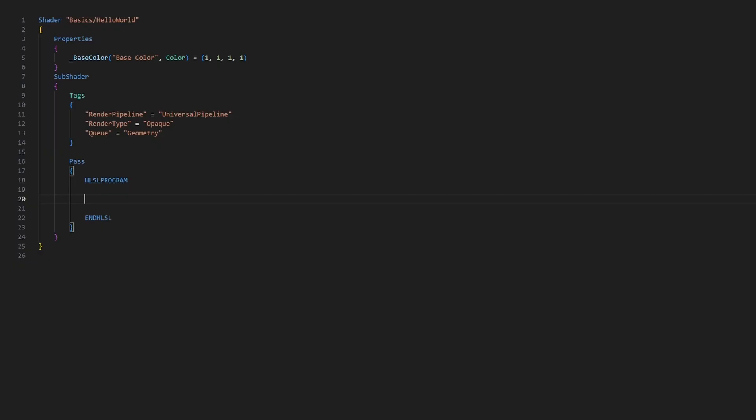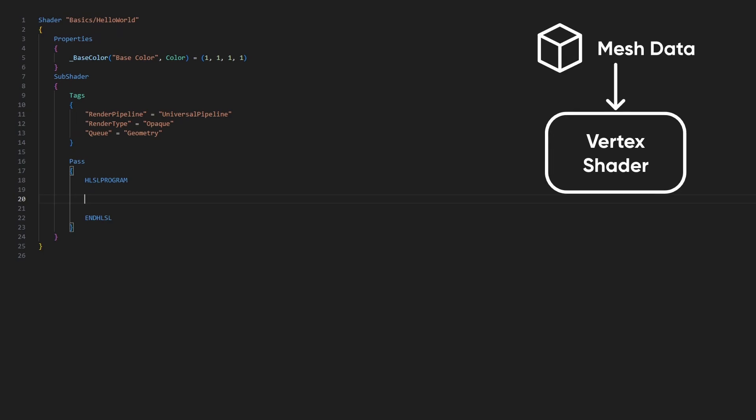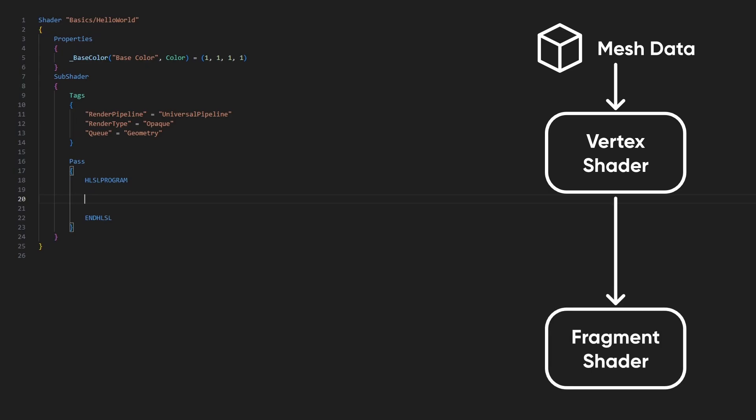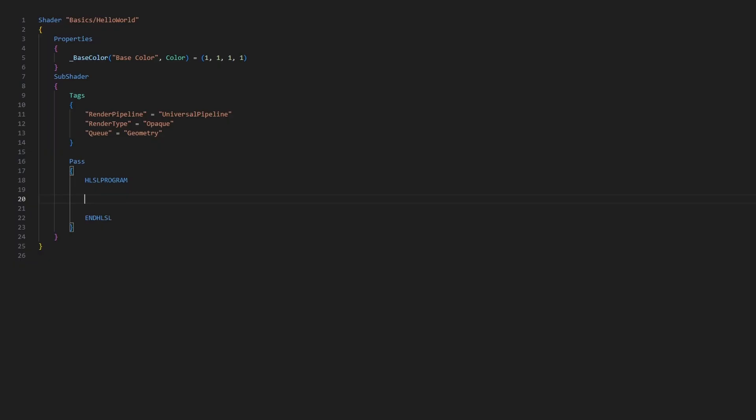First, we need to talk about what the shader will actually be doing. It's a shader's job to work out where our mesh should be drawn on the screen during a step called the Vertex shader. It takes each vertex of the mesh and transforms it from Object Space — where each vertex position is relative to the mesh pivot point — to Clip Space, where each vertex is relative to the screen viewport. Then there is a second step called the Fragment shader, which colours each pixel. In between the two stages, there is a step called Rasterization, which is handled automatically and turns your mesh into individual pixels or fragments, which can then be shaded individually. We will write a vertex shader which automatically runs on every vertex, and a fragment shader which is run on each pixel.